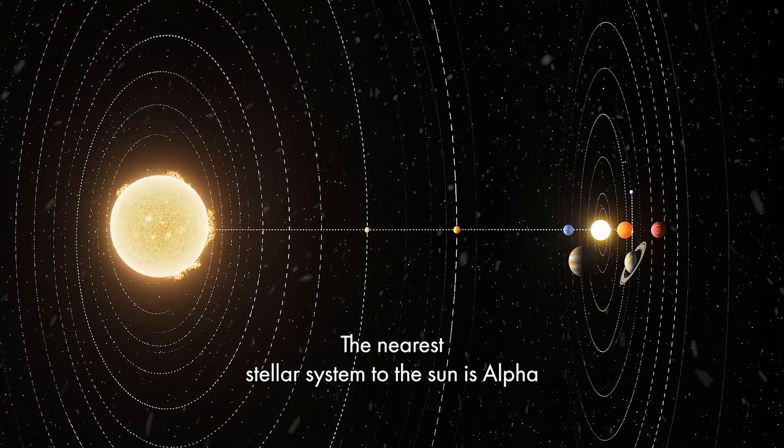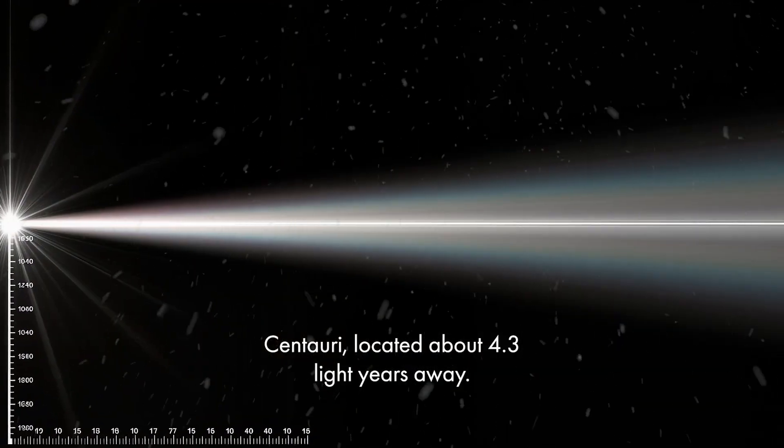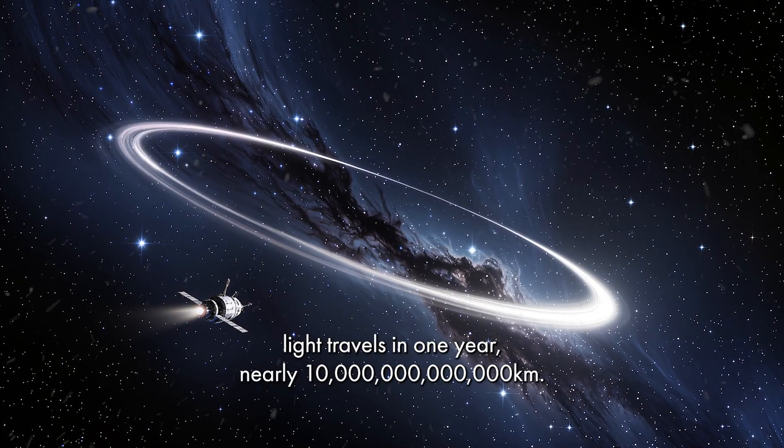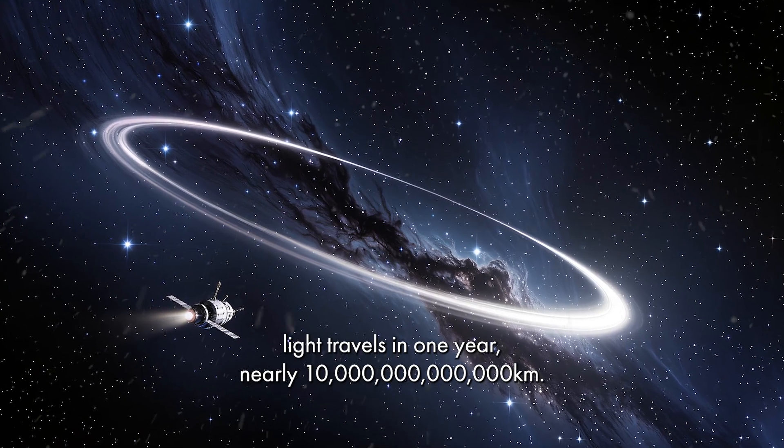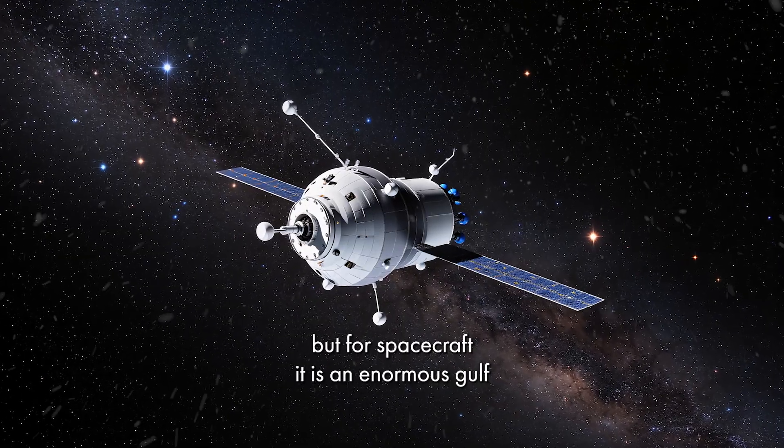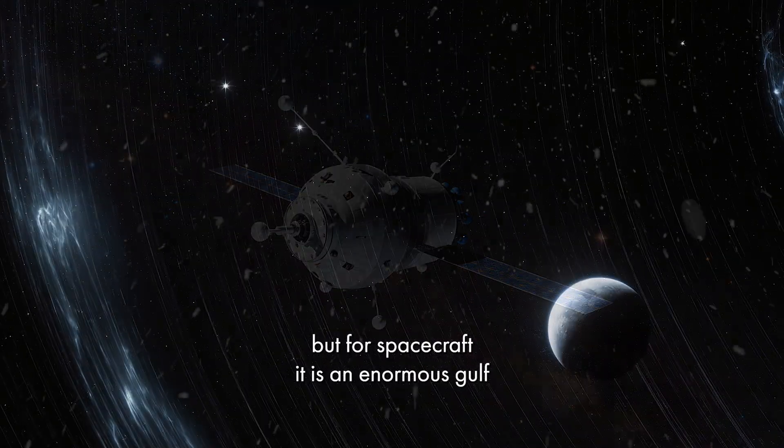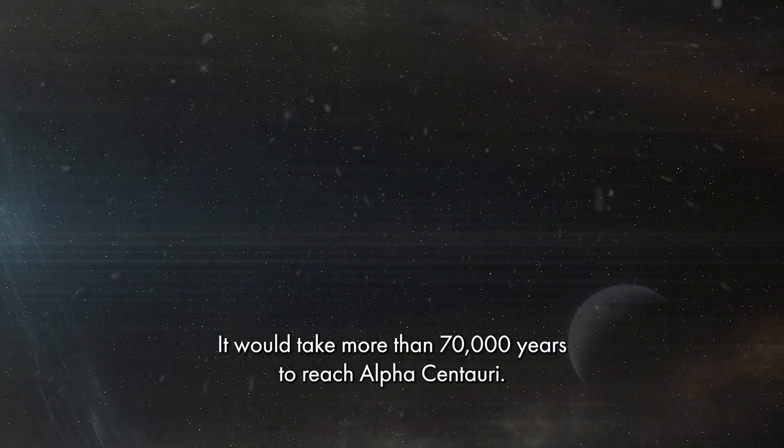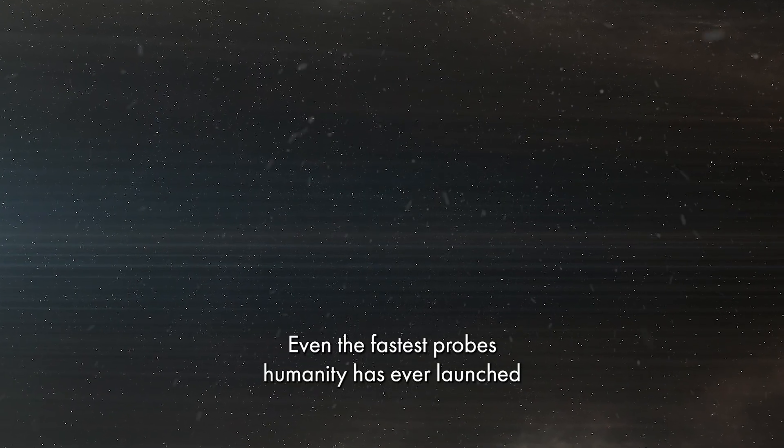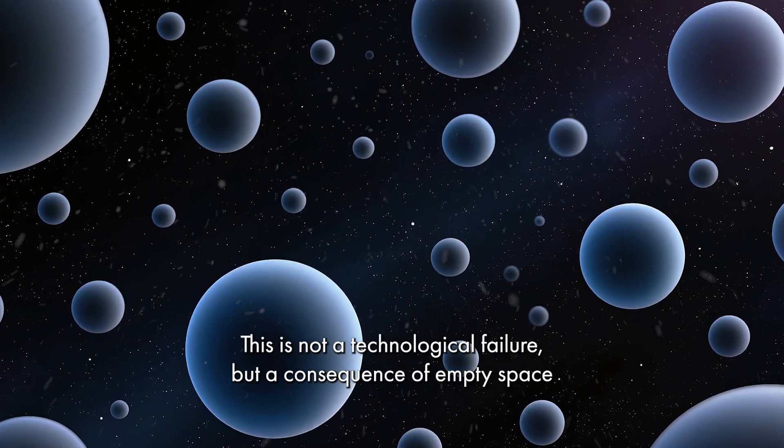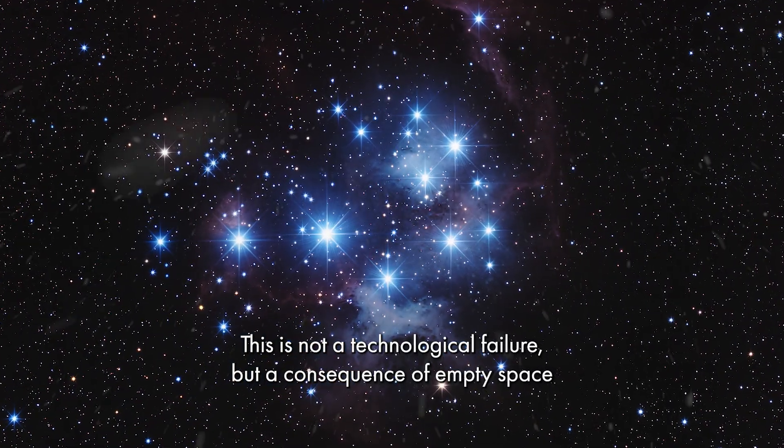The nearest stellar system to the Sun is Alpha Centauri, located about 4.3 light years away. A light year is the distance light travels in one year, nearly 10 trillion kilometers. Four light years sound small on cosmic scales, but for spacecraft, it is an enormous gulf. At the speed of Voyager, it would take more than 70,000 years to reach Alpha Centauri. Even the fastest probes humanity has ever launched barely register against this scale. This is not a technological failure, but a consequence of empty space.